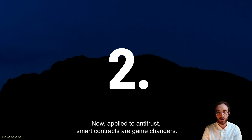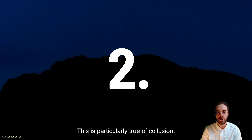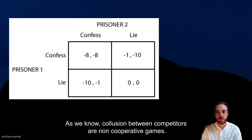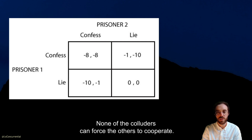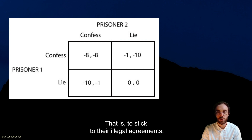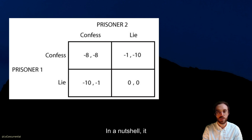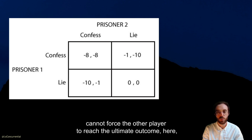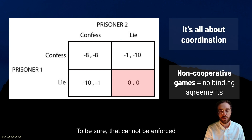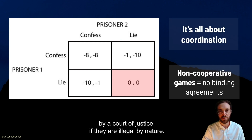Now, applied to antitrust, smart contracts are game changers. This is particularly true for collusion. As we know, collusion between competitors involves non-cooperative games. None of the colluders can force the others to cooperate — that is, to stick to their illegal agreement. Should they have a contract, it is non-enforceable. In a nutshell, they cannot force the other player to reach the optimal outcome, here, to stay in the cartel. To be sure, they cannot be enforced by a court of justice if they are illegal by nature.